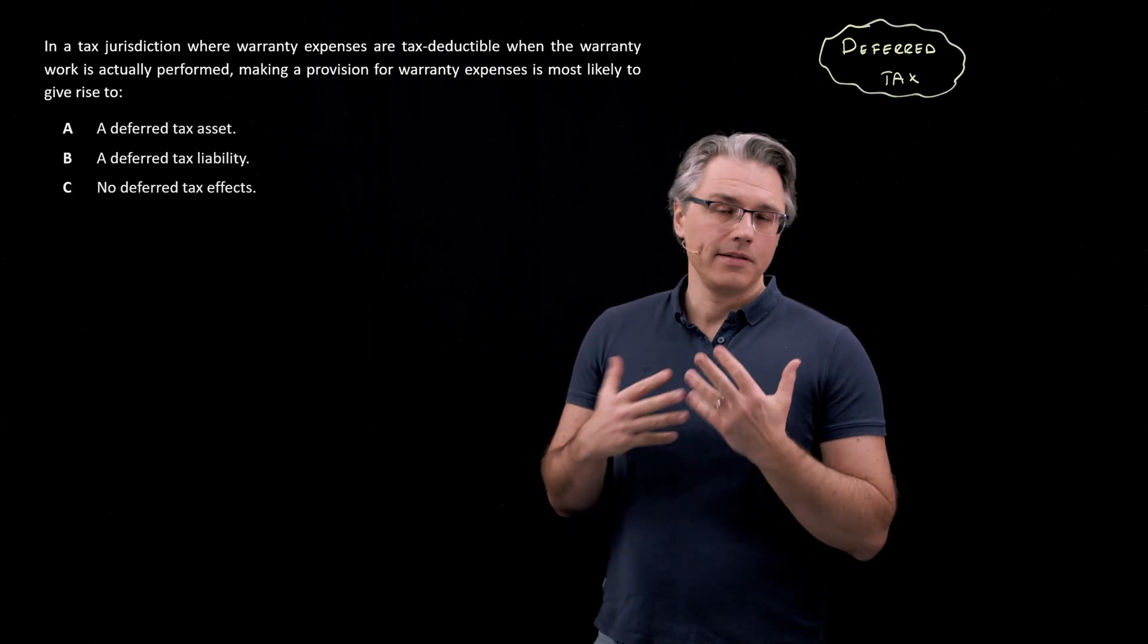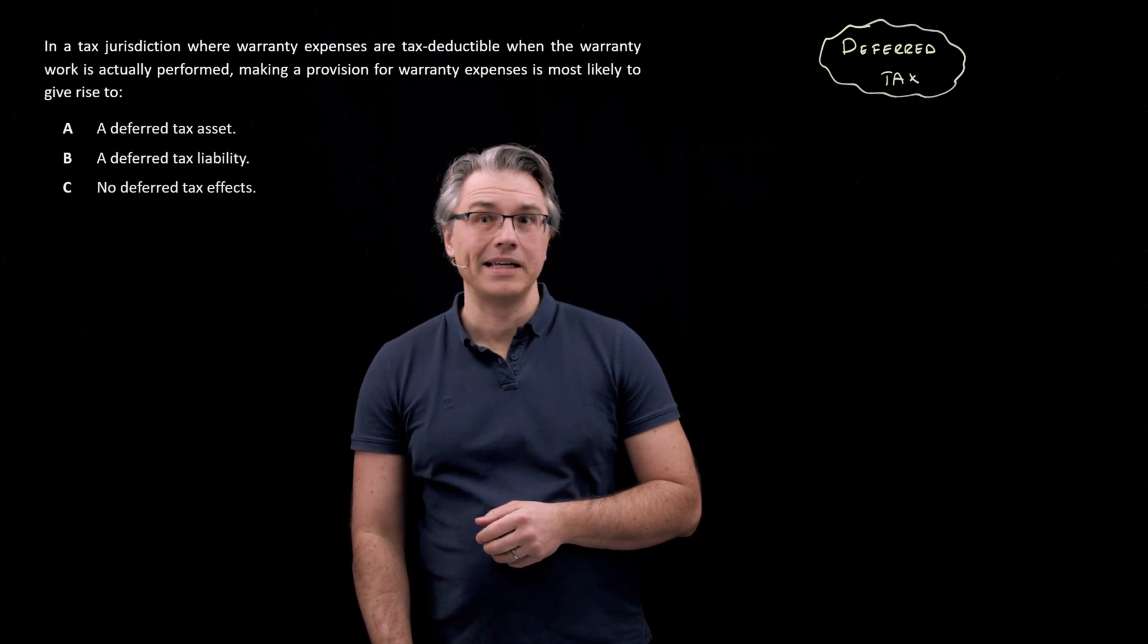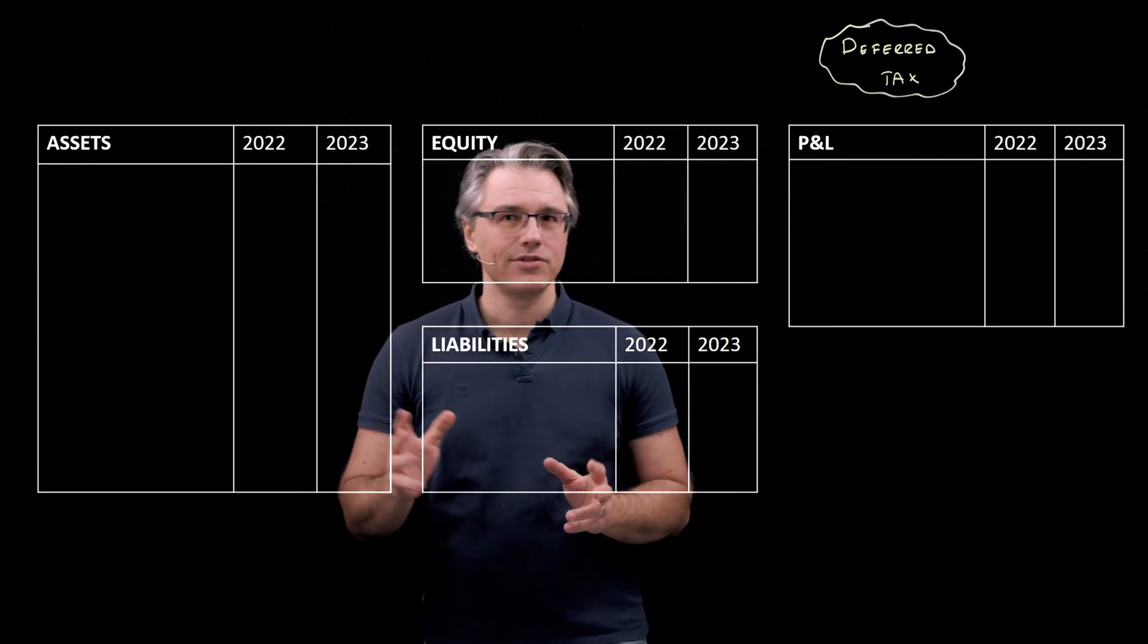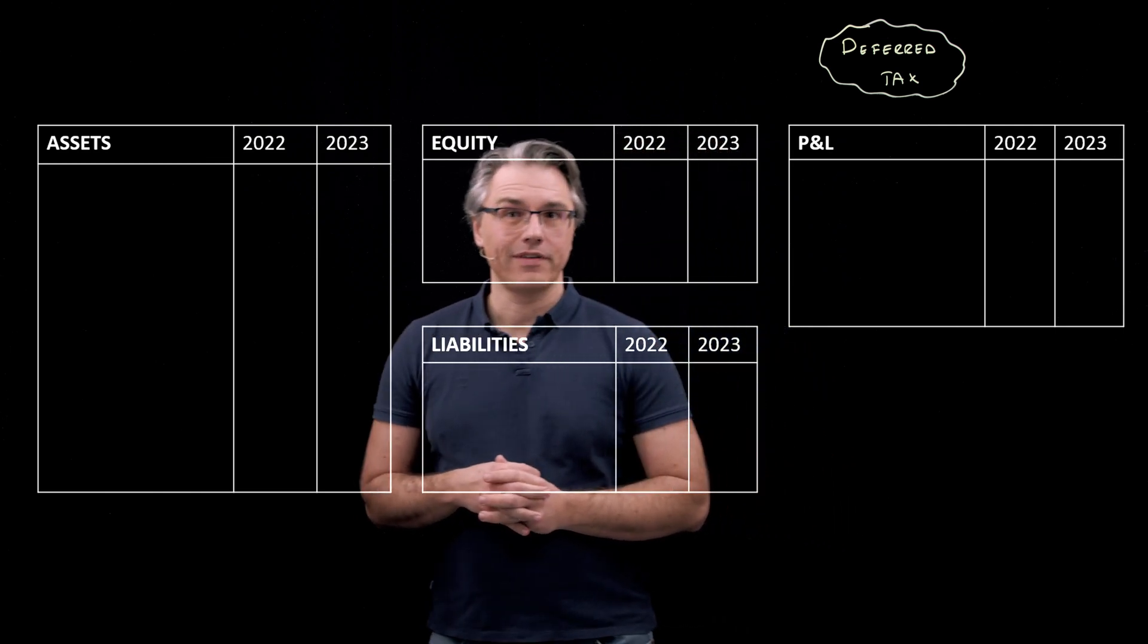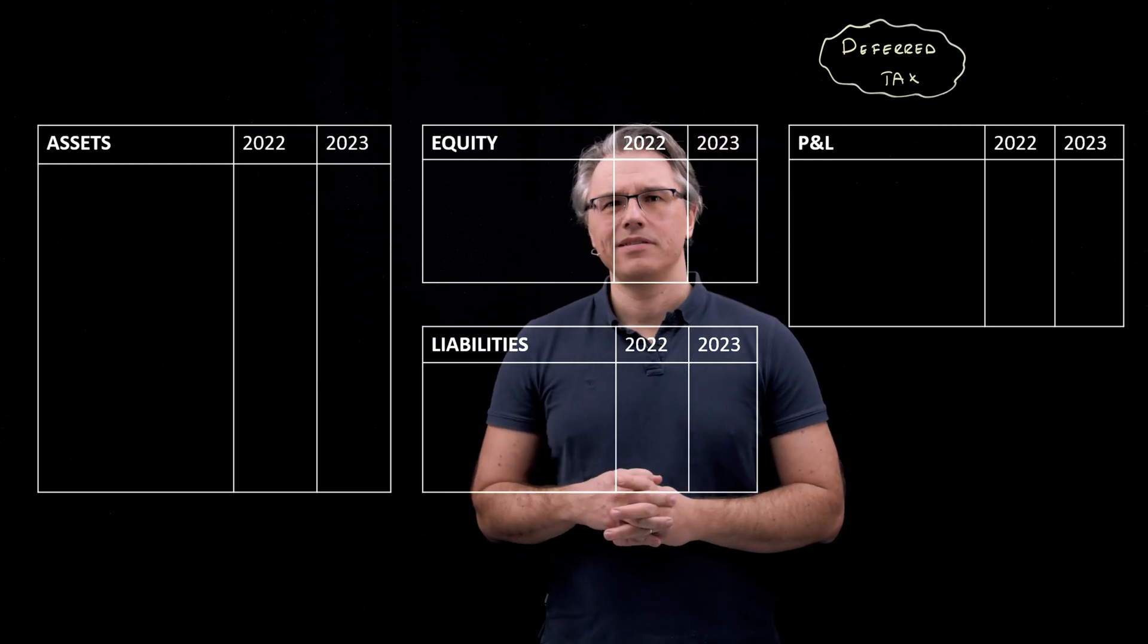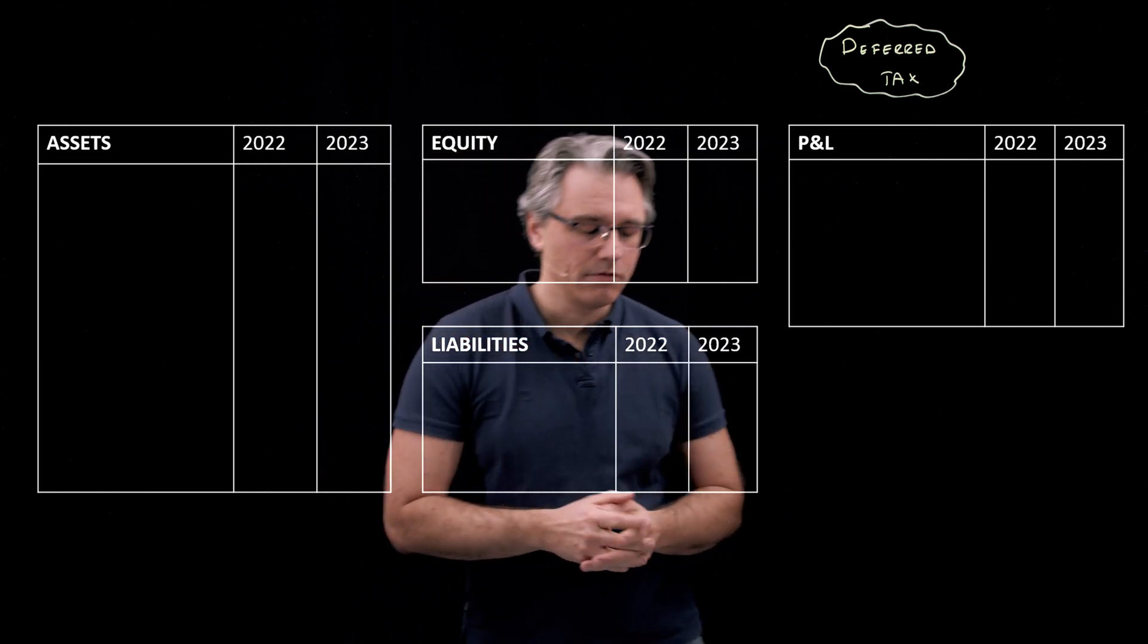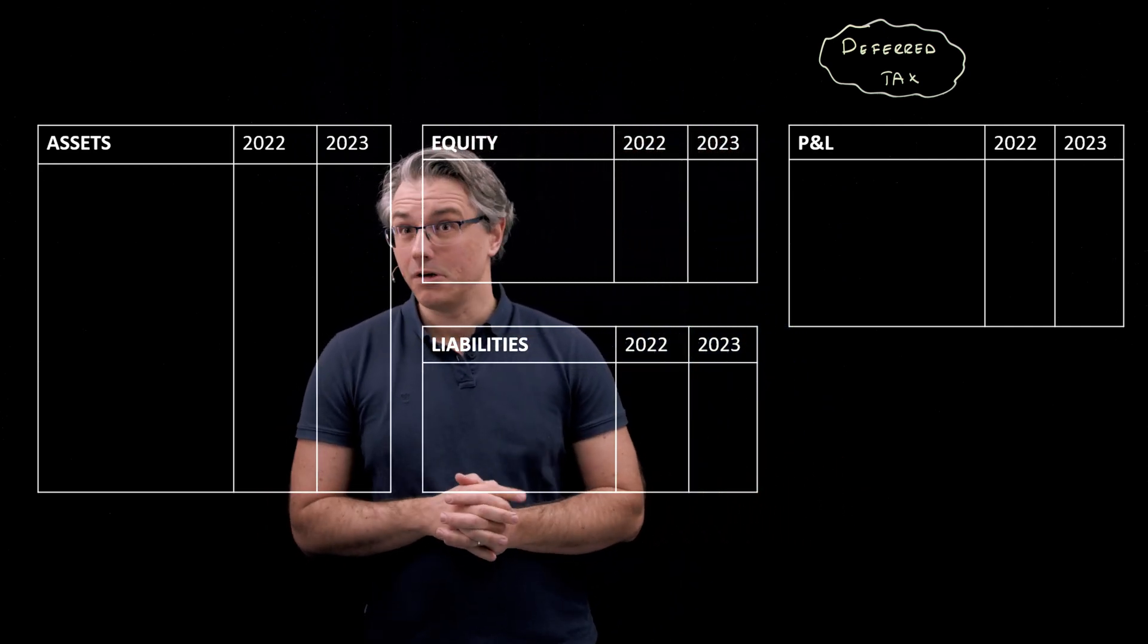So before we provide the correct answer, let's look at this from the perspective of our balance sheet and income statement template, which I'm showing you right now, something you've already become used to. Now it's got the years 2022, 2023, which is carried on from previous questions. But in this question, we don't have specific years and we don't actually have specific numbers. It's a conceptual question, a theoretical one. Nevertheless, I'm going to keep these year numbers. They won't hurt.